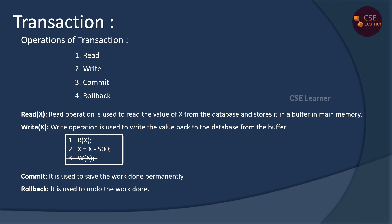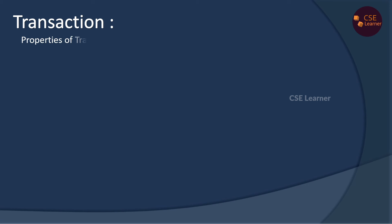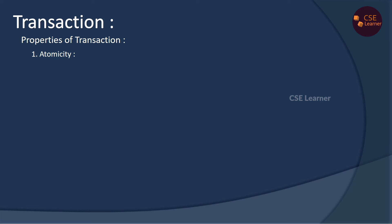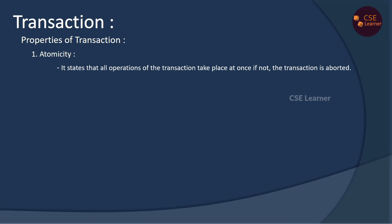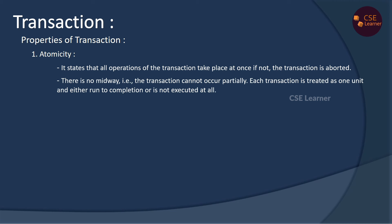That is, we undo changes to restore the same state — that is the rollback operation. In the transaction, there are 4 properties: Atomicity, Consistency, Isolation, and Durability. These are the ACID properties. Atomicity means the transaction is either done fully and completely, or not done at all. That is, all operations are done, or none — the transaction either executes fully or does not execute.